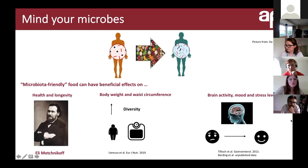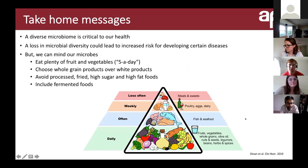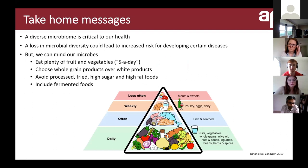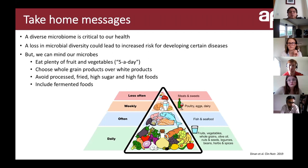The key take-home messages: a diverse microbiome is very critical to our health, and losing microbial diversity can increase our risk for certain diseases. But we have it in our hands to mind our microbes through diet. Get your five-a-day by eating plenty of fruits and vegetables with different colors and textures. Choose whole grain products over white — brown bread, pasta, or rice instead of white. Try to avoid processed, fried, high-sugar, or high-fat foods. And try including fermented foods such as kefir, sauerkraut, or kombucha in your diet.